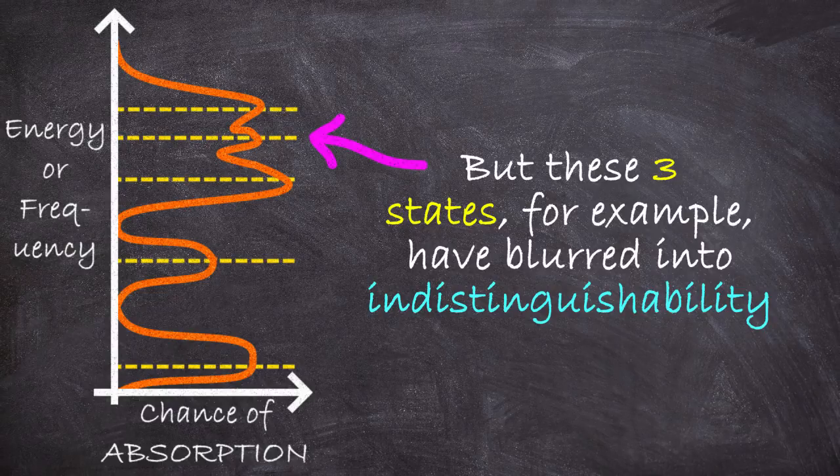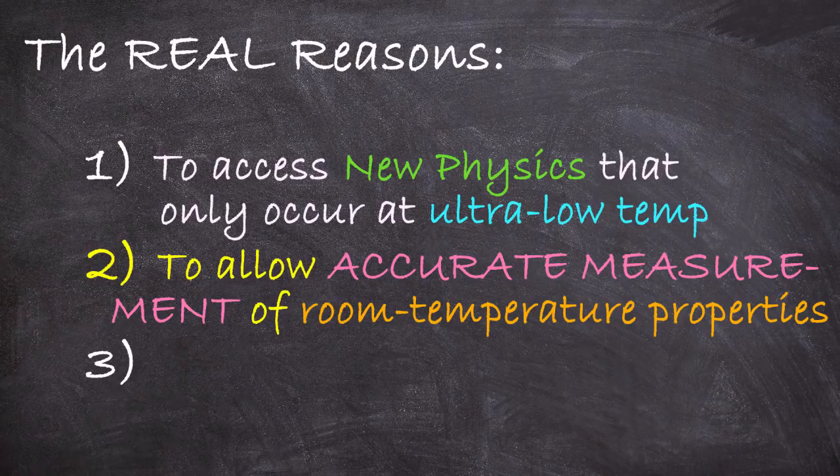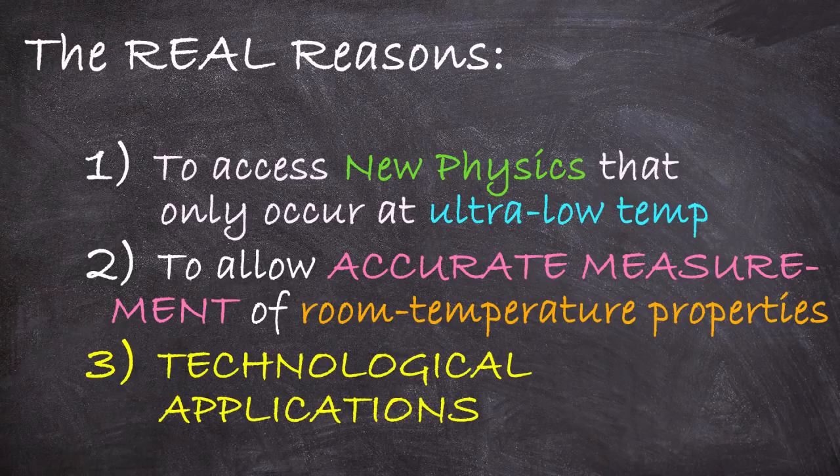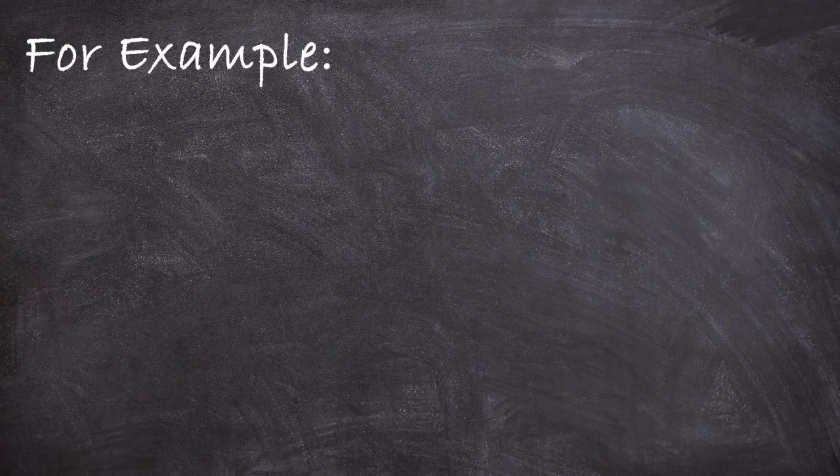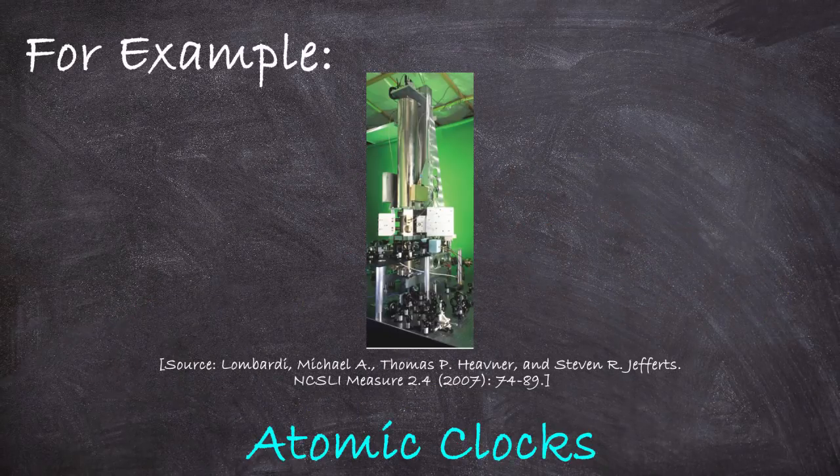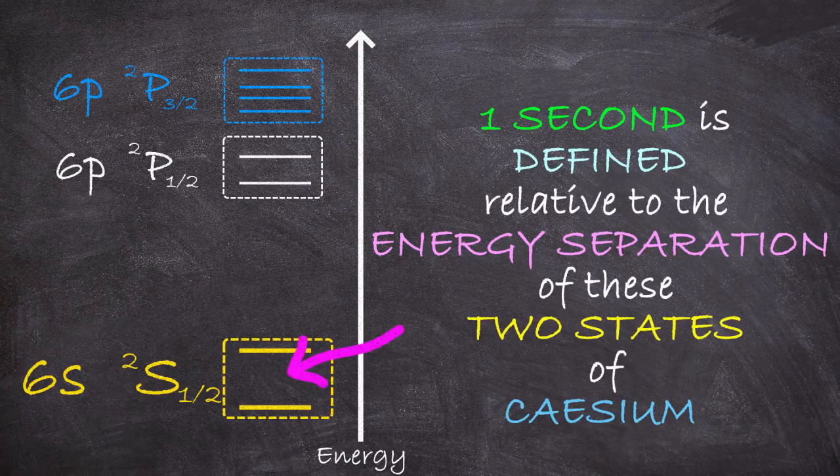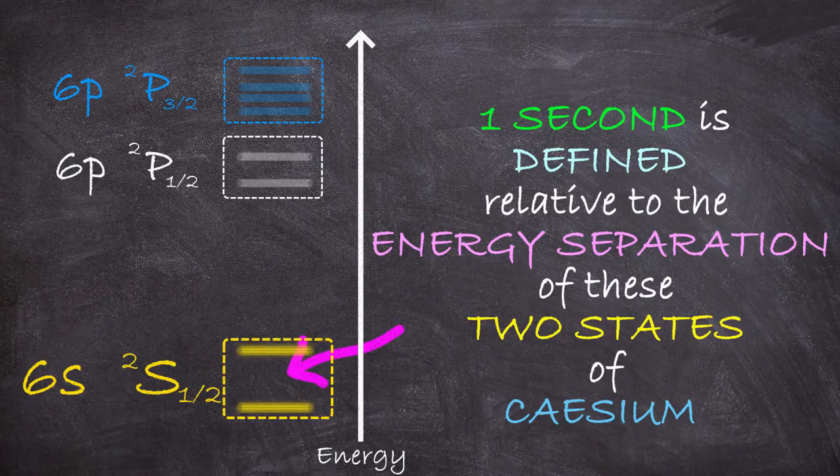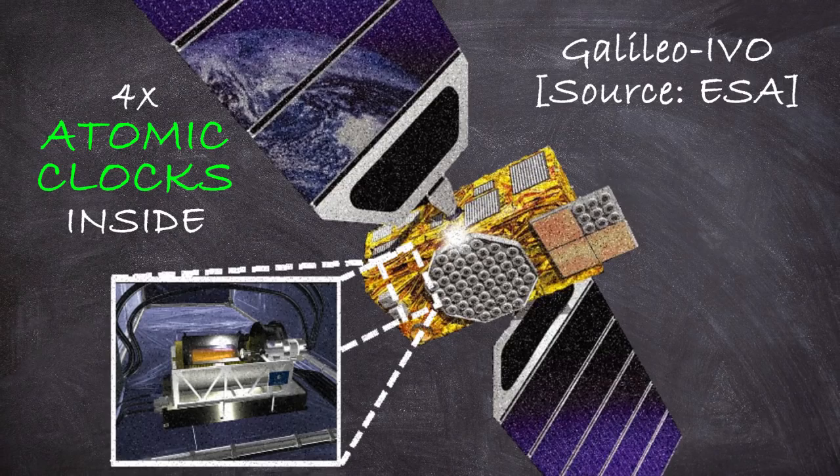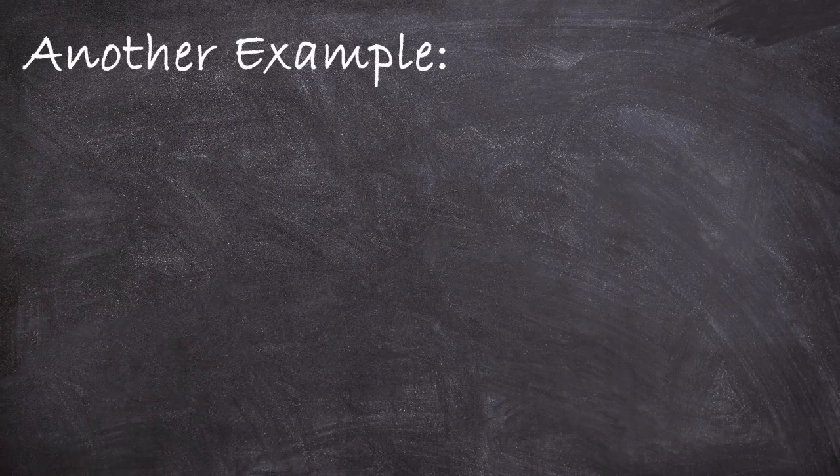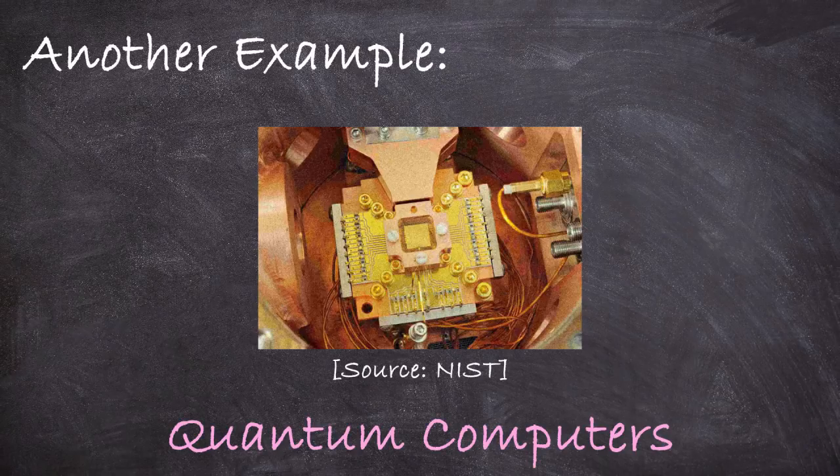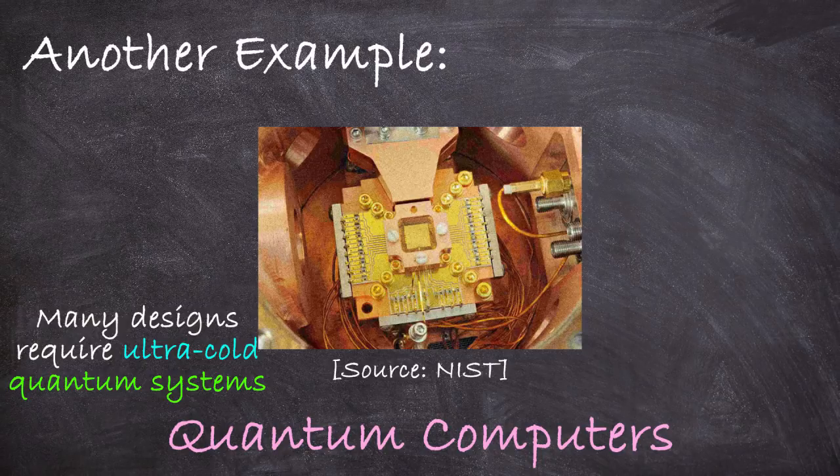So to measure those quantities, you have to cool the atoms down. And that actually leads nicely into the third reason, which is for technological applications. One technology where we use such ultra-cold atoms is in atomic clocks, which basically keep time by cycling between these energy states. If those energy states are broadened or blurred, the clock is less accurate. And these atomic clocks are essential, for example, for things like GPS technology. Another cutting-edge field where ultra-cold atoms are important is quantum computing, where precise control and manipulation of quantum states is a must.